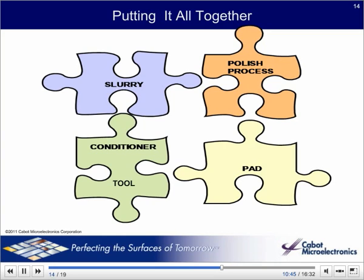Cabot Microelectronics is actively engaged in developing CMP technology and selling pads and slurries that are consumed during CMP. Pads and slurries are carefully designed and precision manufactured to ensure performance, consistency, quality, and cost. Pads are engineered thermoplastic polyurethane foams with controlled pores, grooves, and surfaces. Slurries are complex mixtures of nanoparticles and chemicals all working together to ensure high polishing rates for a very specific wafer surface composition, often tailored and customized for a specific customer and application.